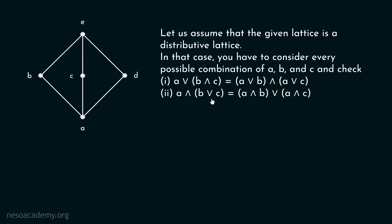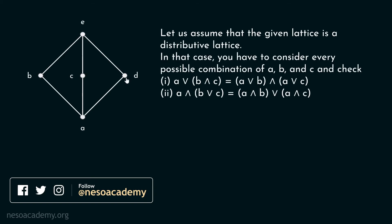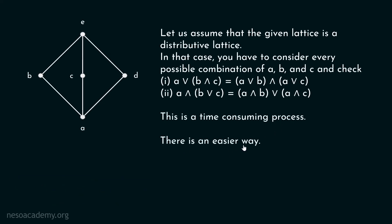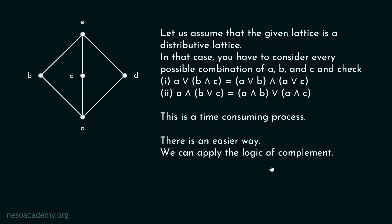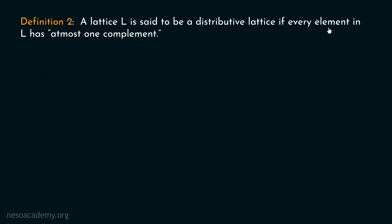There is an easier way to determine whether a given lattice is a distributive lattice. We can apply the logic of complements. A lattice L is said to be a distributive lattice if every element in L has at most one complement. At most one means zero or one complement. Let us consider this example once again and verify using this second definition.